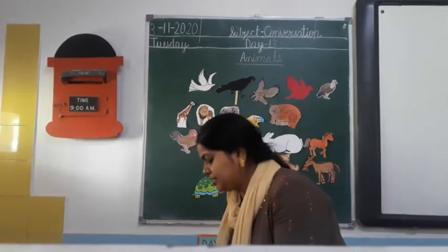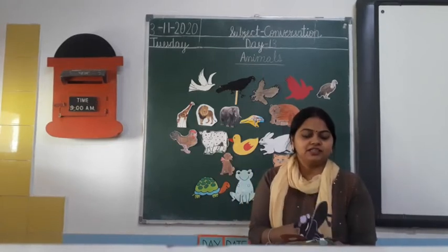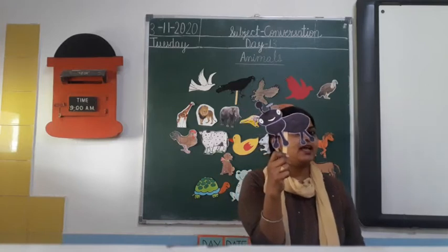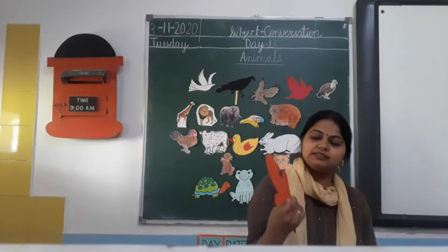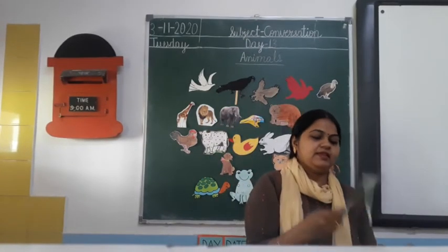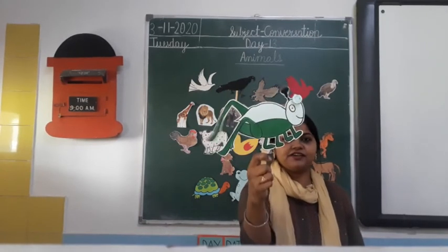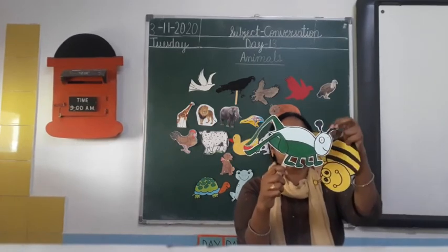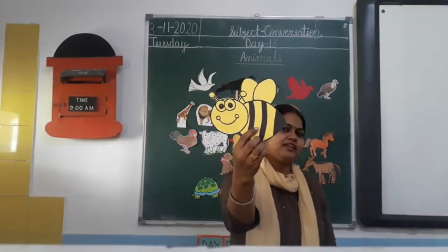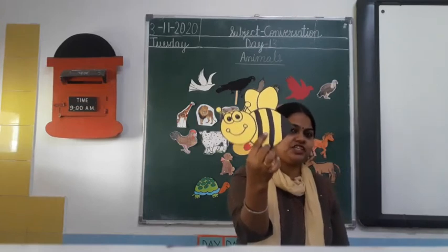Now I am going to show you some insects. Which insect is this? Ant. And see this — a colorful butterfly. What is this? Grasshopper. A green grasshopper. And honeybee — it gives us honey. Which insect is this? Honeybee.